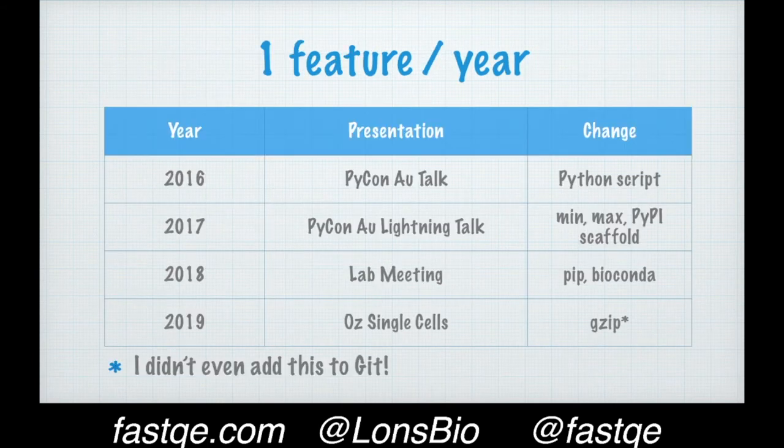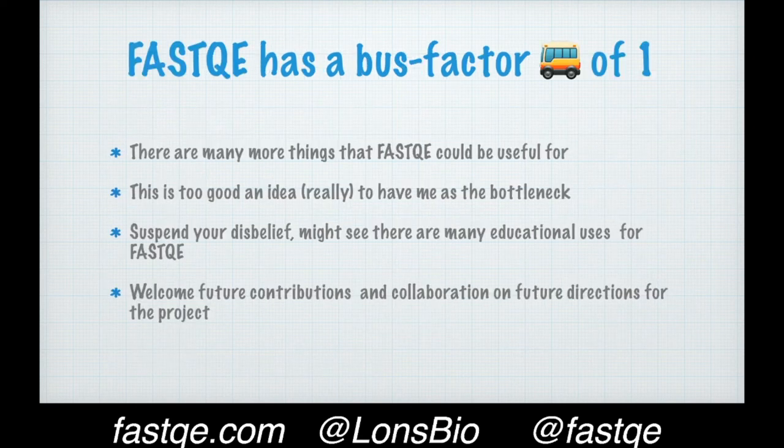Presentation-driven development leads to about one feature a year. So we started with a script. A year later, we put in the minimum and maximum and got it ready for PyPI and installing via PIP. But then it took a whole year to actually get it onto PIP and Bioconda, and a whole year later to get Gzip support — and that didn't even make it into the Git repository. Because it's just me. FastQE has a bus factor of one. There are many more things it could be useful for, but me working on my own is the bottleneck.